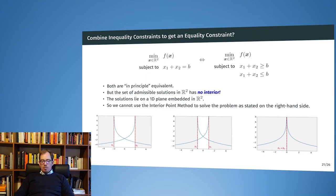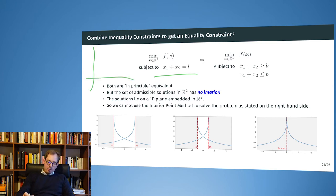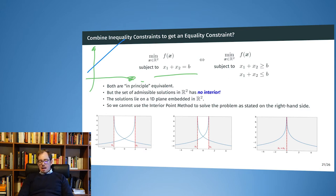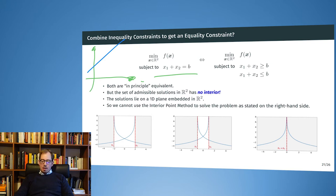So why can't we combine inequality constraints to get an equality constraint? Let's say we had an equality constraint x1 plus x2 must be equal to b — an affine constraint, forcing the solution onto a straight line with some offset. The question is why can't we express this as two opposing inequality constraints: x plus two greater or equal to b, and x plus two smaller or equal to b? Mathematically, the intersection of these two gives exactly the equality constraint.